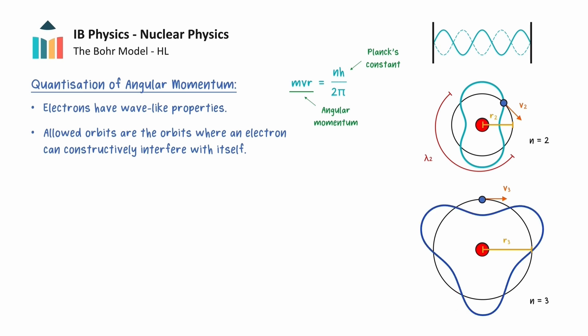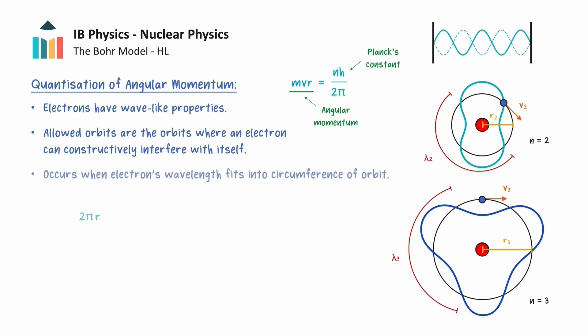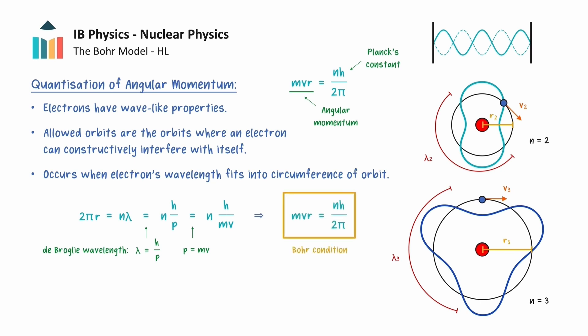The following two diagrams show these wavelengths for the n equals 2 and n equals 3 orbits. More precisely, the circumference of the orbit, given by 2pi multiplied by the radius r, must be equal to an integer number of the electron's wavelength, n lambda. The de Broglie wavelength of a particle is given by the Planck constant divided by the particle's momentum, and the momentum is given by the particle's rest mass multiplied by its velocity. So we can make these substitutions into this expression. By rearranging for angular momentum, we arrive at the result above, which is known as the Bohr condition. And so we have shown that treating an electron as a wave leads to the quantization of the electron's angular momentum.